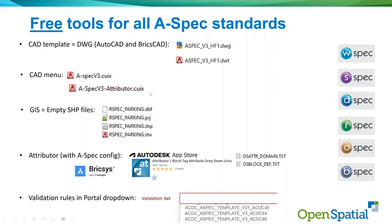From a GIS perspective, we make a set of empty shapefiles available that basically has the configuration in there that you can work with. That's available for all the standards: WSPEC, A-SPEC, B-SPEC, R-SPEC, O-SPEC. We just received the final version of ASPEC V5, so we're busy with the update process, and in the not-too-distant future there will be an updated template.